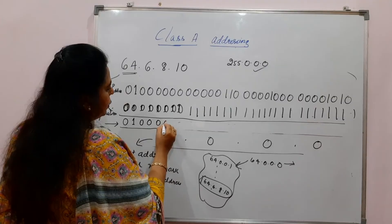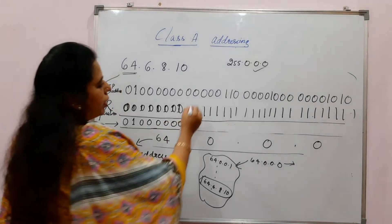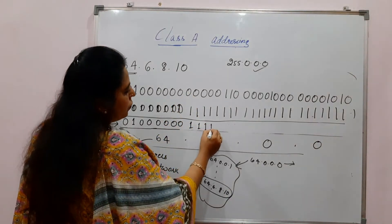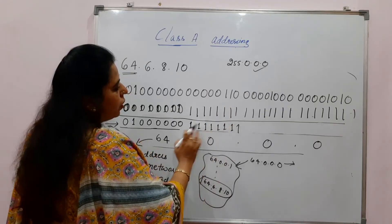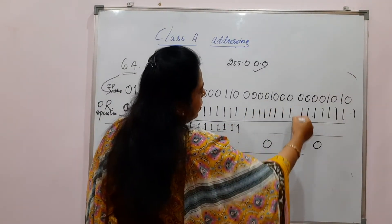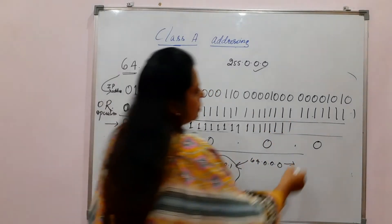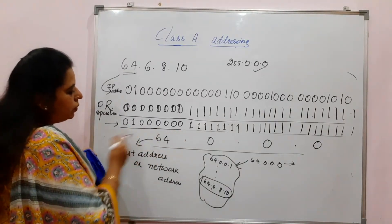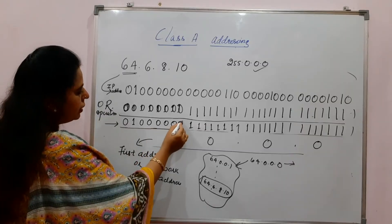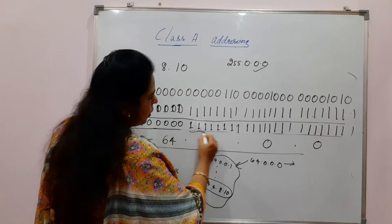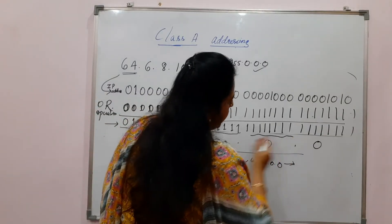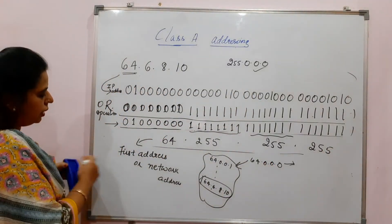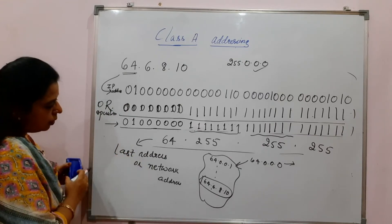For the first octet, the OR operation preserves the original bits. For the next 8 bits, 0 OR with 1 gives 1, so you get all ones in that octet, which is 255. In the third octet, the bitwise OR operation also results in all 1s — 255. And the last octet also becomes all 1s. Converting the result to dotted decimal notation: first octet is 64, and the remaining three octets are each 255. So the result is 64.255.255.255, which is the broadcast address.